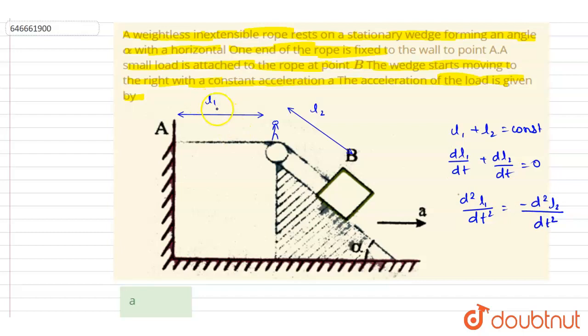So if you see here, l1 is increasing with a rate of a because this pulley is also moving with this wedge with acceleration a. So we will write down here: acceleration is equals to minus a. So with respect to this wedge, it will be moving up by an acceleration a.